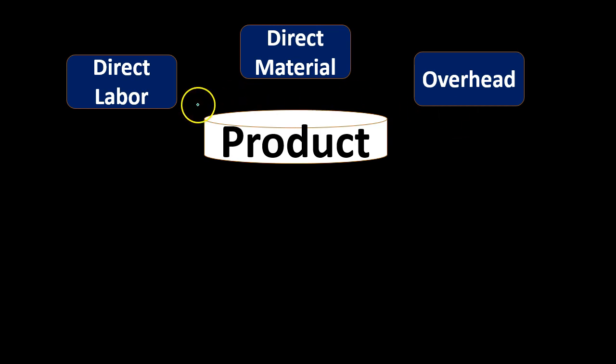Overhead includes anything within the factory that we use but cannot apply directly — pretty much anything other than direct materials or direct labor. Things like the depreciation of the factory need to be allocated to the guitars, because we need the factory to make them. A supervisor salary also goes into overhead because we don't know who the supervisor was supervising at any given time, or how much time was spent on one job versus another, so we have to allocate it using some allocation method.